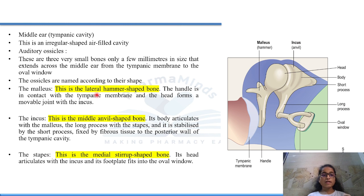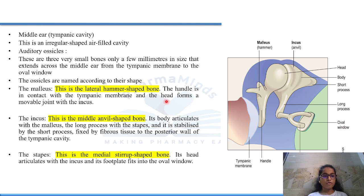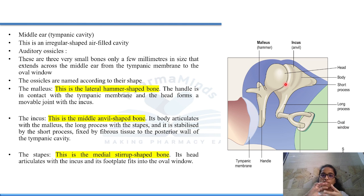Talking about malleus — malleus is the lateral hammer-shaped bone. The handle is in contact with the tympanic membrane and the head forms a movable joint with the incus. So the malleus is in contact with the tympanic membrane and also forms a movable joint with the incus.